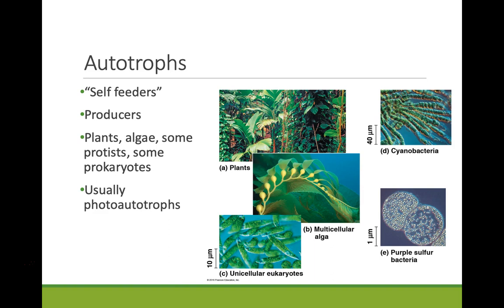Not all autotrophs use sunlight and carbon dioxide — some will reduce sulfur, turning it into an energy source. We are going to focus specifically on photo-autotrophs, which are organisms that use light energy to produce their organic molecules and store chemical energy. Those organisms using a chemical source instead of light — like purple sulfur bacteria — are called chemo-autotrophs; they get energy from breaking chemical bonds and storing it in a different form.